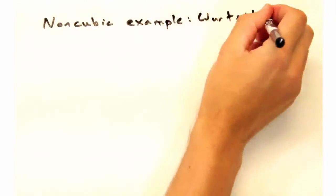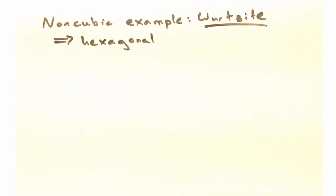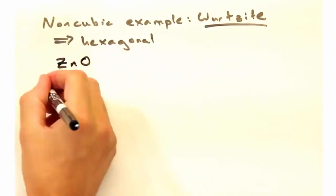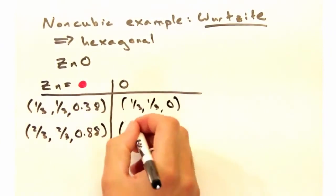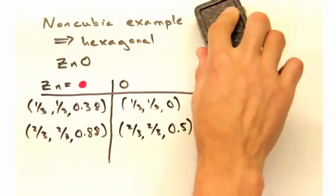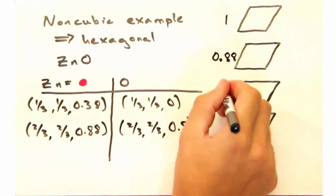So before we leave, it would be good to go over a non-cubic example. Here we have the wurtzite structure, which is a hexagonal crystal. Like in the perovskite structure, here the coordination of the B atom is not quite clear. Let's see if slices can help us out.